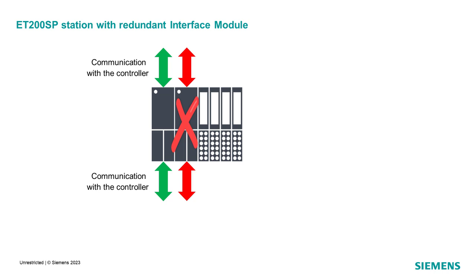The user has nothing to do — the redundancy management of this R1 solution is executed automatically by the firmware of the ET200SP station and the H controller.